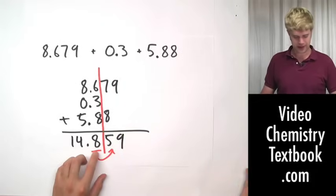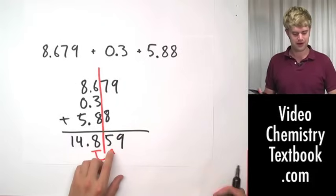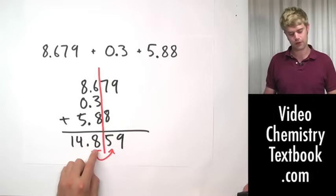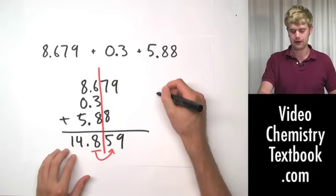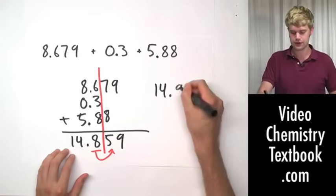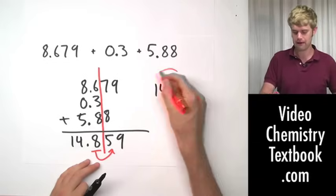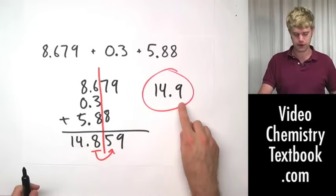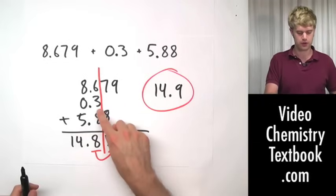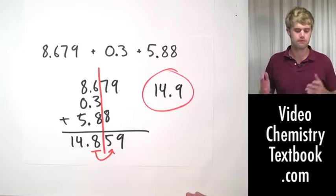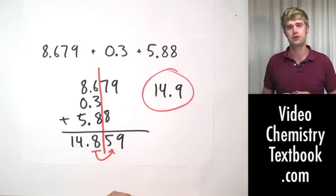The 8 is the last decimal place, I look to the right of it, there's a 5, which means that I'm going to round this 8 up to a 9. So, the final answer is going to be 14.9, which has one decimal place, just like this number here, 0.3, which also had one decimal place. So, that's how we do addition and subtraction with rounding for significant figures.